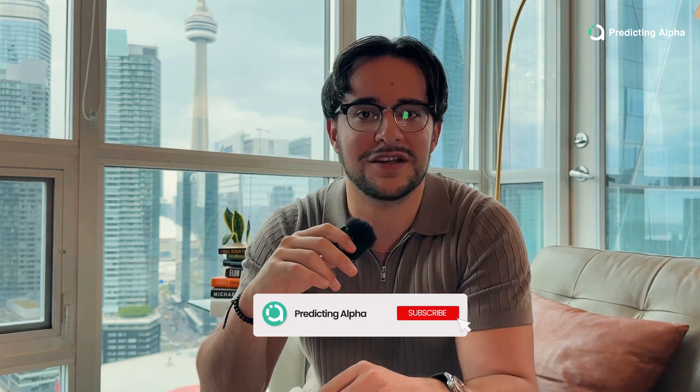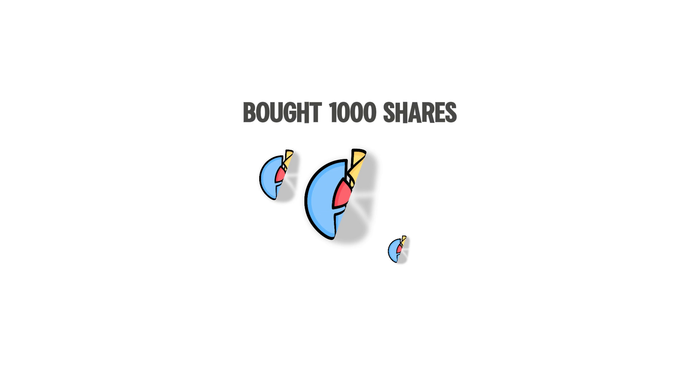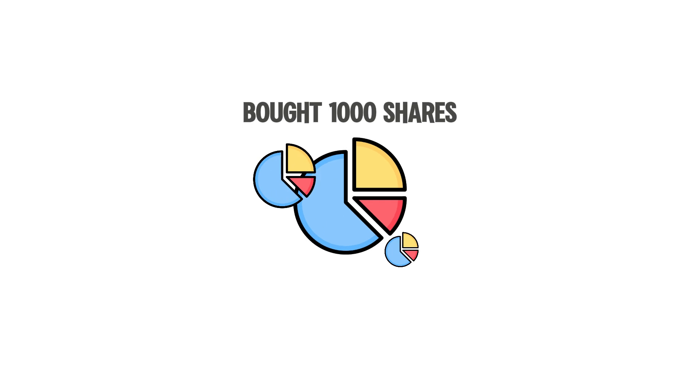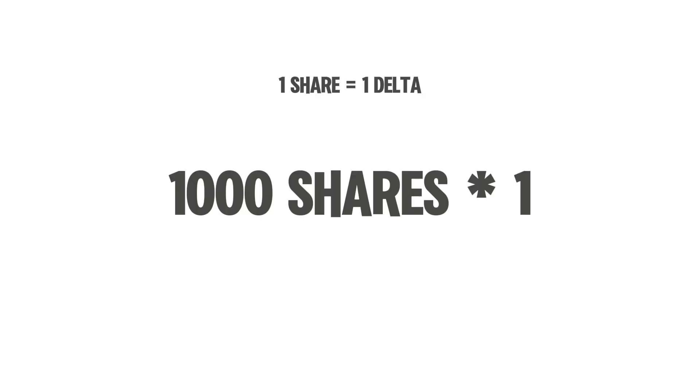Delta actually exists outside of options — stocks have delta as well. And in the world of stocks, delta is super easy to understand. If you buy one share of a company and that company goes up by one dollar, then you make $1. If it goes down by $1, you lose $1. If you bought 1,000 shares and the company went up by $1 in share value, you would make $1,000, because each share had one delta and you have 1,000 shares.